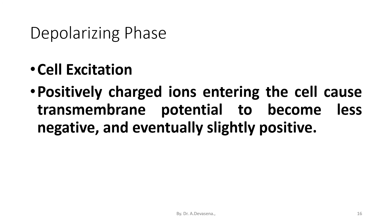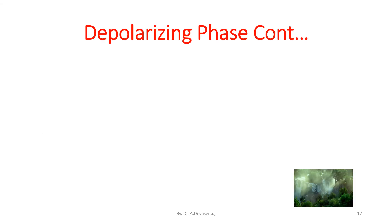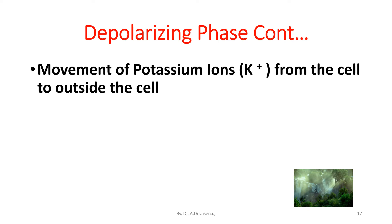Positively charged ions entering the cell cause the transmembrane potential to become less negative and eventually slightly positive; this change is referred to as depolarization. A short time later, the membrane's permeability to potassium ions increases, resulting in an outflow of potassium ions from the cell towards the outside. The outflow of potassium ions causes the transmembrane potential to decrease, which causes the membrane's permeability to both sodium and eventually potassium to decrease to their resting levels.